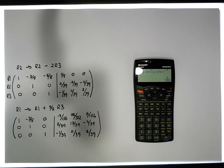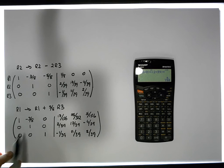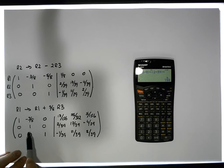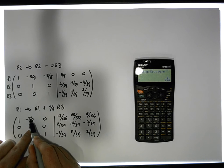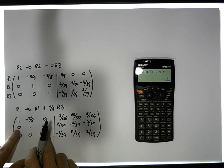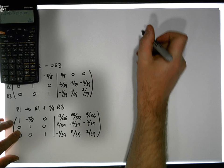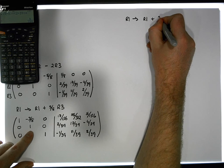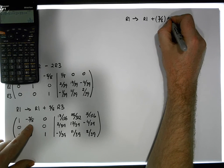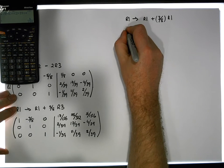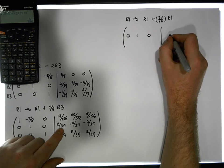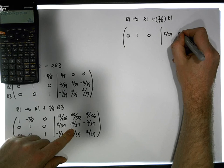We're nearly there — we've nearly converted this matrix into the identity matrix. There's one last operation to do, which is to convert this minus 3/8 into a zero. Everything above and below the leading diagonal needs to be zeros. If I multiply this one by 3/8 and add it on to this row, that will change to a zero, and nothing else will be affected because we have zeros here. So row one becomes row one's current values plus 3/8 of row two's values. Row two remains the same: zero, one, zero, then 2/29, 17/29, and minus 4/29.